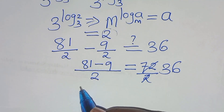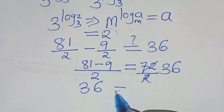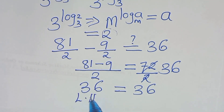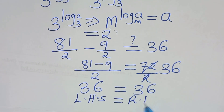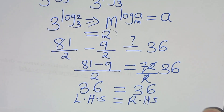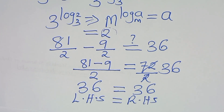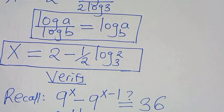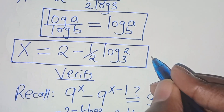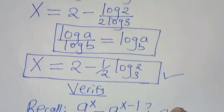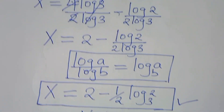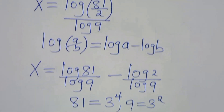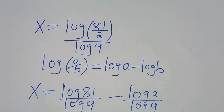So this implies that 36 is equal to 36. The left-hand side equals the right-hand side. This implies that the value of x, which is 2 minus one half log 2 to base 3, actually satisfies the equation. Thank you for following the steps. Like this video and subscribe. See you in the next video. Bye bye.